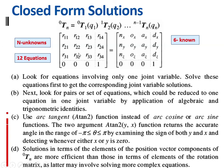Step b: look for the set of equations that can be reduced to one equation in one unknown. For example, if r13 is a function of only theta1 and you calculated theta1 from step a, then r12, which is a function of theta1 and theta2, can now be used to determine theta2 — because theta1 is already known. You identify equations that reduce to one variable by applying algebraic and trigonometric identities.